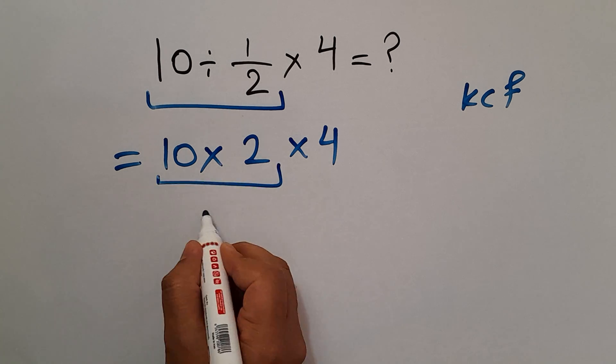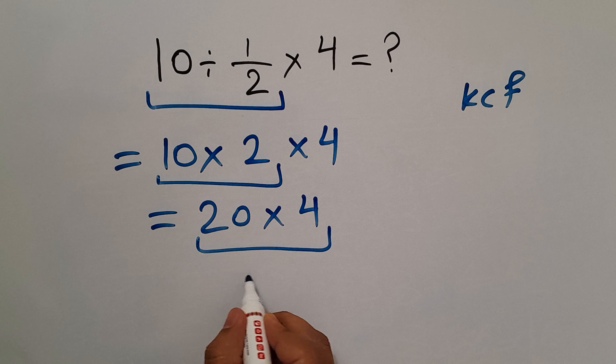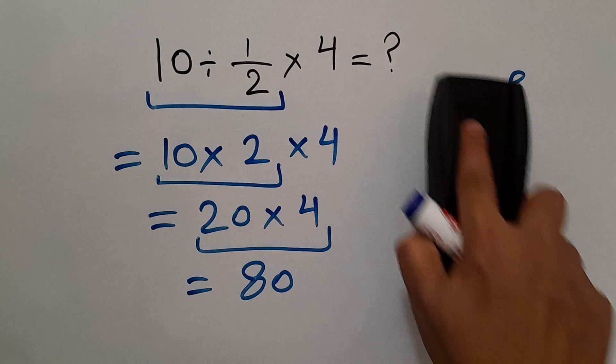So 20 times 4 which equals 80. So our final answer to this problem is just 80.